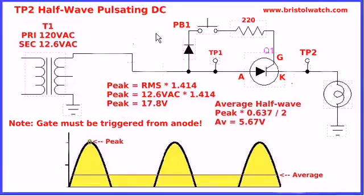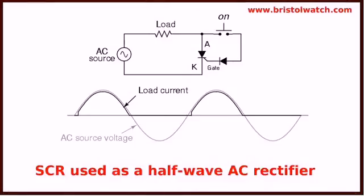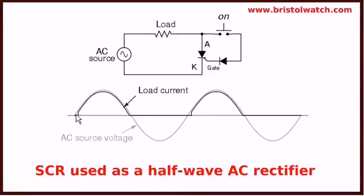Let's look a little bit closer at how we can use this with AC. Here is a redrawing of my circuit from the earlier slide, simplified so you can see it better. As far as the load goes, the load does not care if it's in the anode side of the circuit or the cathode side, but the gate current still has to come from the anode side. If I push the switch, it will conduct only during the positive half cycle.